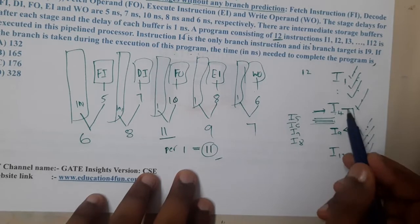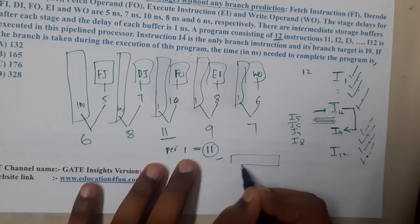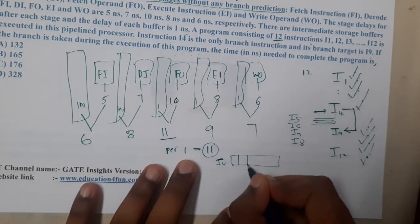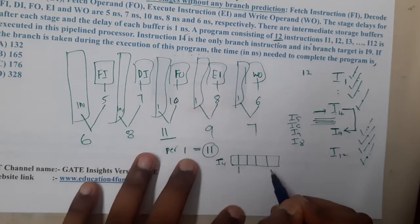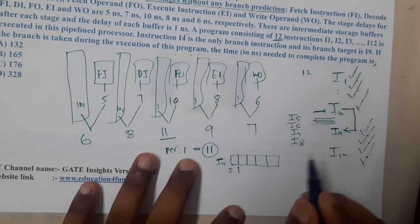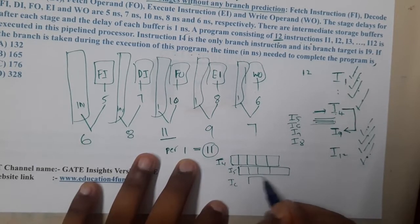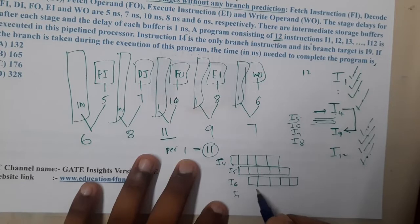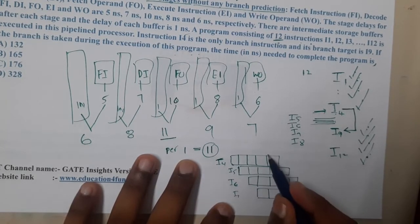But when our processor is working, it doesn't know that this jump needs to be taken. If you assume this is I4, it's a five-stage pipeline, so one, two, three, four, five. These are the five stages. Indirectly, before its execution is completed, we don't know that I9 needs to be called, so I5 will start here, I6 will also start. Let me draw the diagram. I6 will also start, similarly I7 will also start.